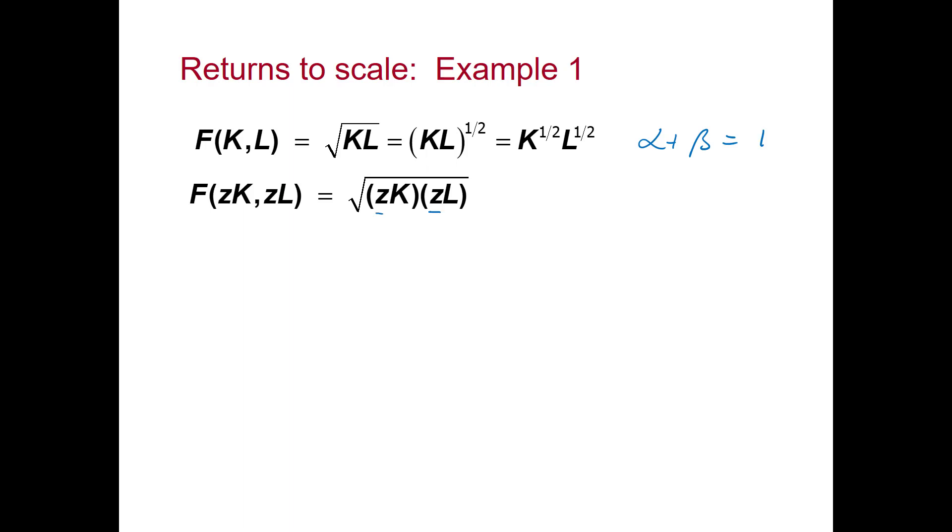What we do now is to expand and simplify. That's, of course, Z squared times K times L. If we can take the Z squared outside the square root sign, the square root of Z squared is just Z.